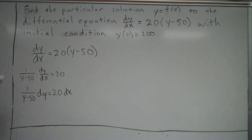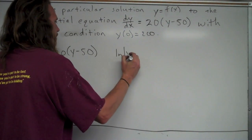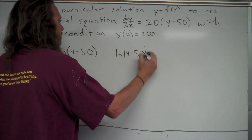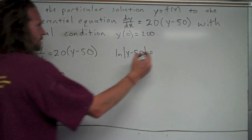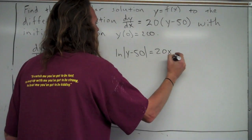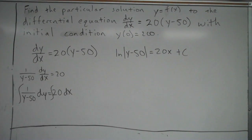Once you separate the variables, then you're going to want to take the antiderivative of both sides. The antiderivative of 1 over y minus 50 would be natural log absolute value y minus 50. On the right-hand side, the antiderivative of 20 is just 20x plus c. I've got to make sure I put my plus c in at that step.